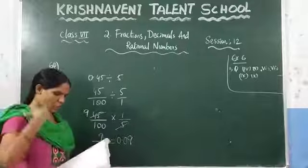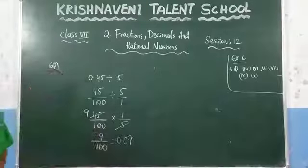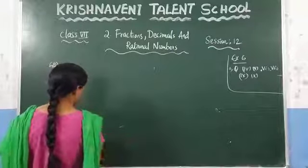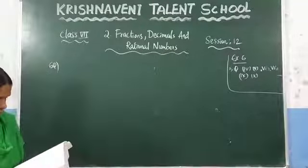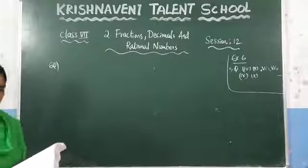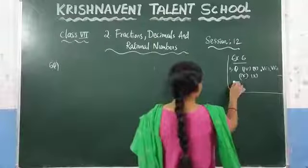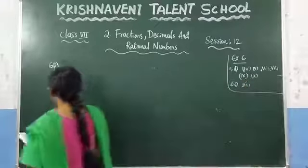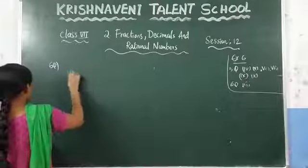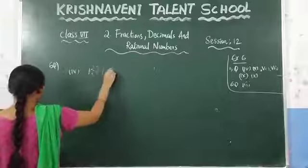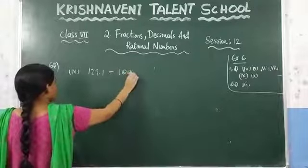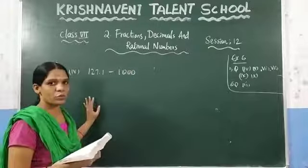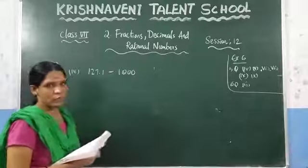Now the third question in Q6 is similar to the first question, so you can do that on your own. See the fourth question: 127.1 divided by 1000. There are two methods to solve this. We will solve using both methods. The first method is normal division.